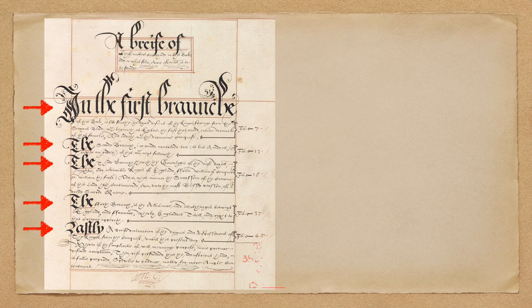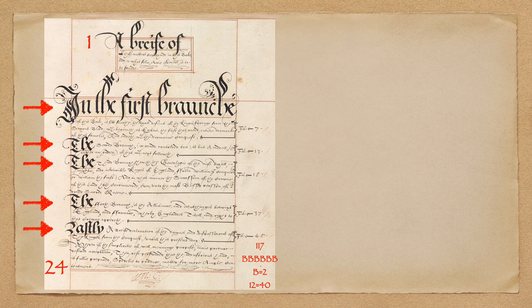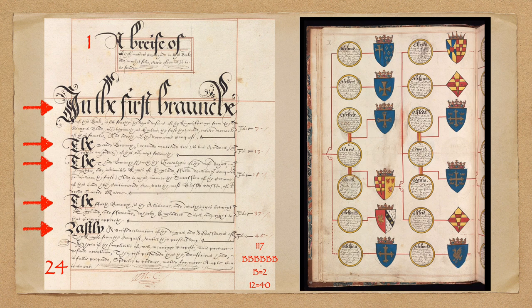If we add up the page numbers it comes to 117, and a repeated Latin gematria of six B's — and we know B is 2, so six twos is 12, and we know that's 40. Must be coincidence. We have 24 lines in this table of contents, and 24 is Queen Elizabeth's secret correspondence number, but there may also be another meaning to it. The circles on the left with writing are individual names, not all monarchs, but including wives, brothers, sisters, and coat of arms.